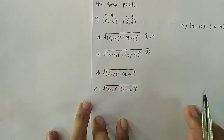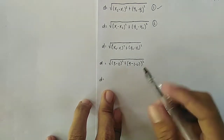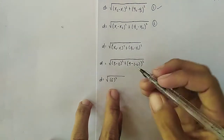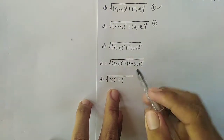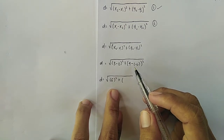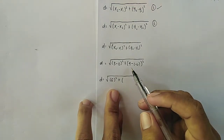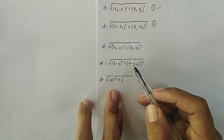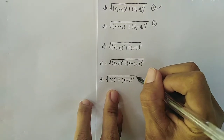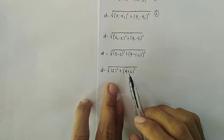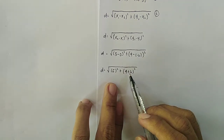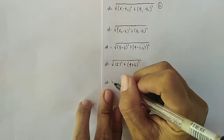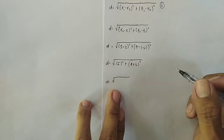Let us simplify the terms inside the parentheses. We have 5 minus 0, that is 5, then squared. For the second term: 4 minus negative 6. Change the sign of the subtraction and proceed to addition — that is the rule for subtracting integers. So negative 6 becomes positive 6, and we have 4 plus 6, which equals 10, then squared.